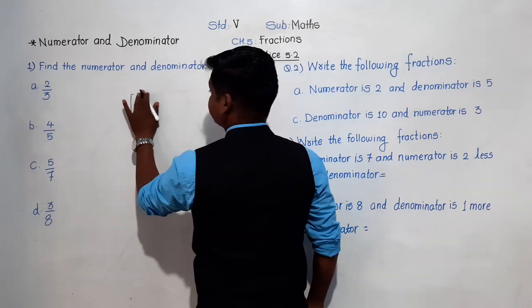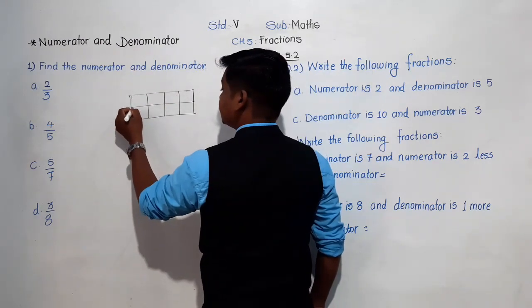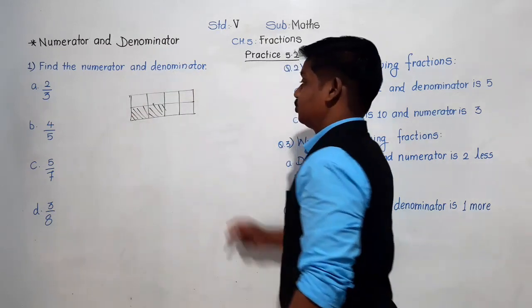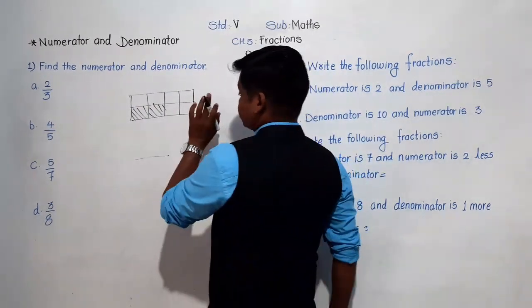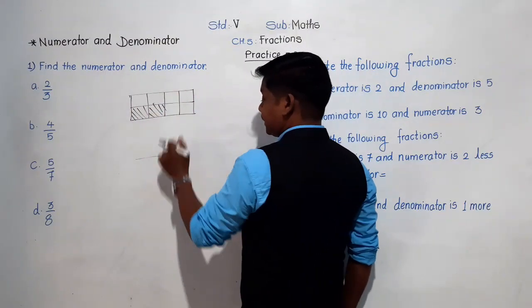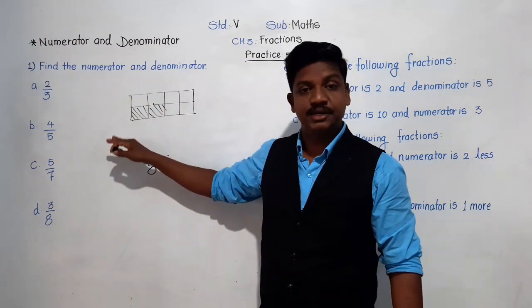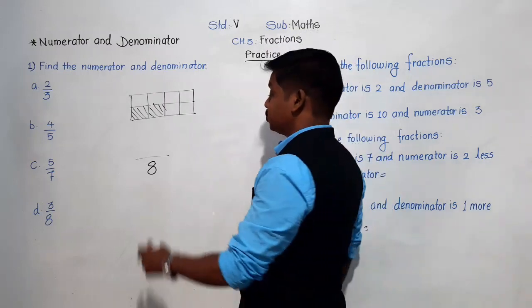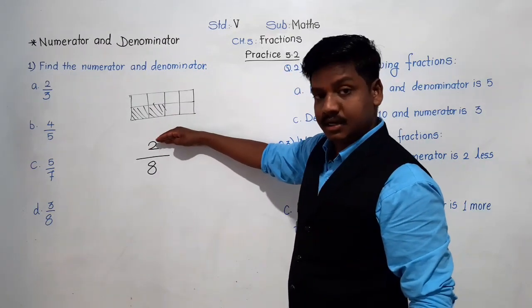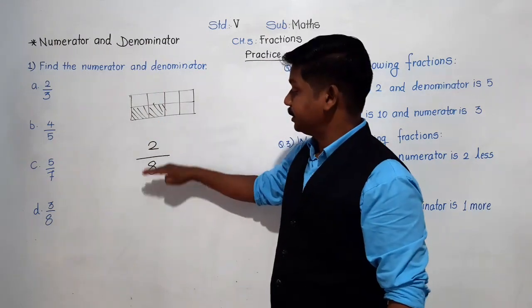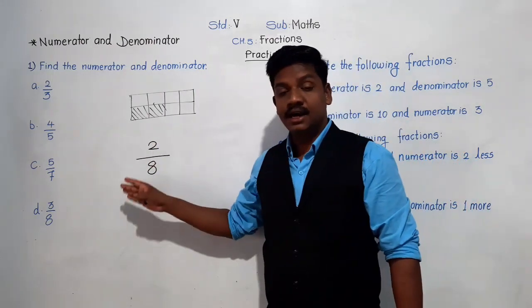In the previous lecture we saw how to write a fraction for the shaded part. Suppose out of eight equal parts two parts are shaded. We count the total parts: one, two, three, four, five, six, seven, eight. The total parts are written below the bar — eight. Then we count the shaded parts and write them above the bar — two. The number above the bar represents shaded parts and the number below the bar represents total equal parts. This bar is called the division bar.